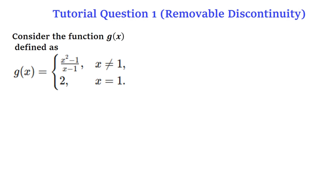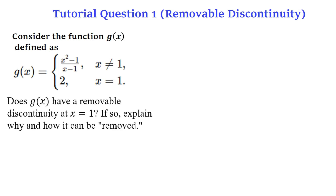The problem is: what is actually happening at x equals 1? If you put x equals 1 in the denominator of (x² - 1)/(x - 1), you get 1 minus 1, which is 0, and anything divided by 0 is undefined. So there is a point of discontinuity there. Let's plot the graph to check whether there is a removable discontinuity at x equals 1.